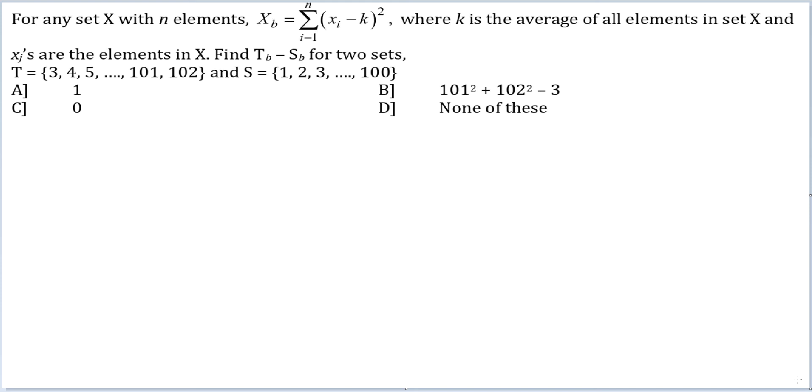Where k is the average of all the elements in set X and x_j's are the elements in X. Find T_D minus S_D for two sets. T equals 3 to 102 and S equals 1 to 100.